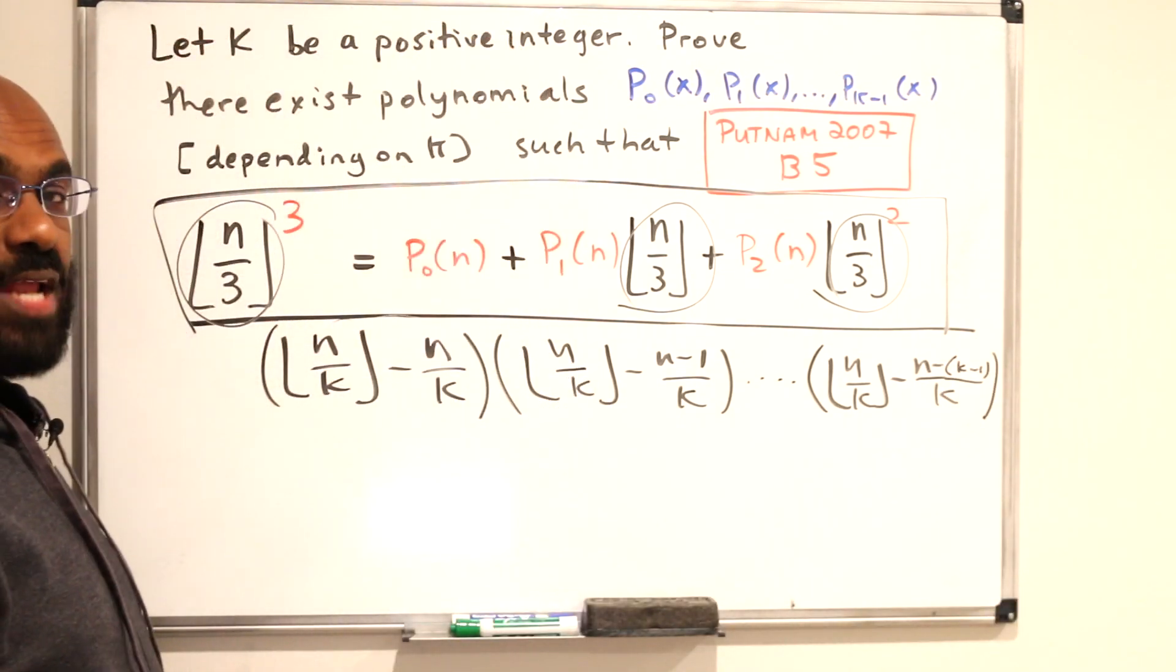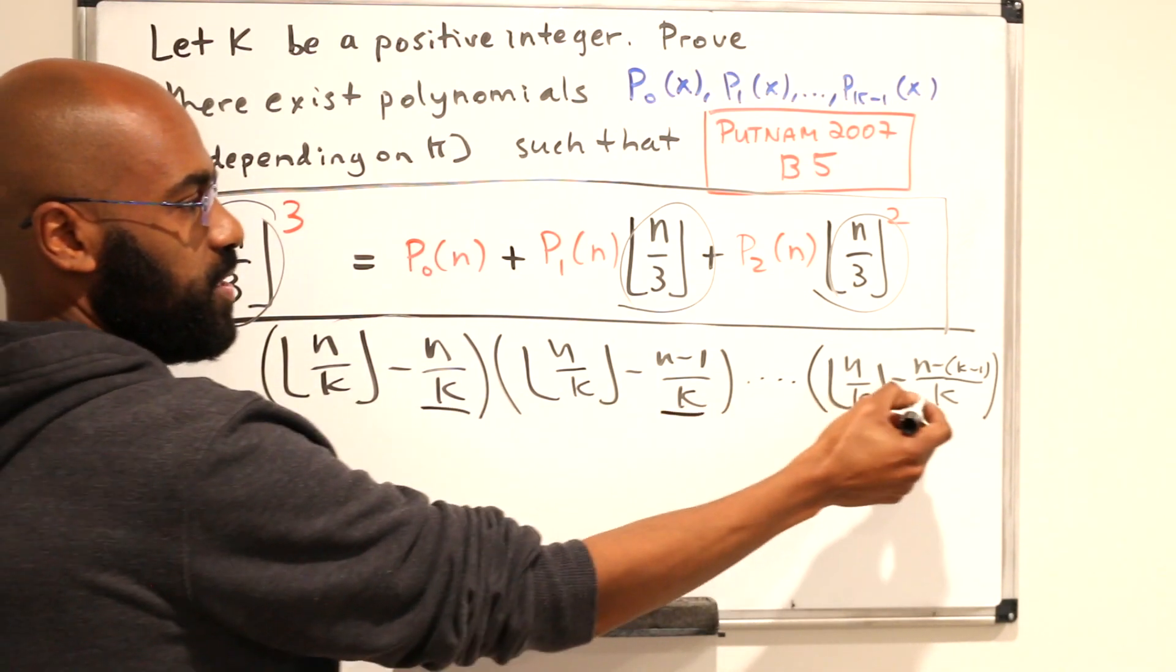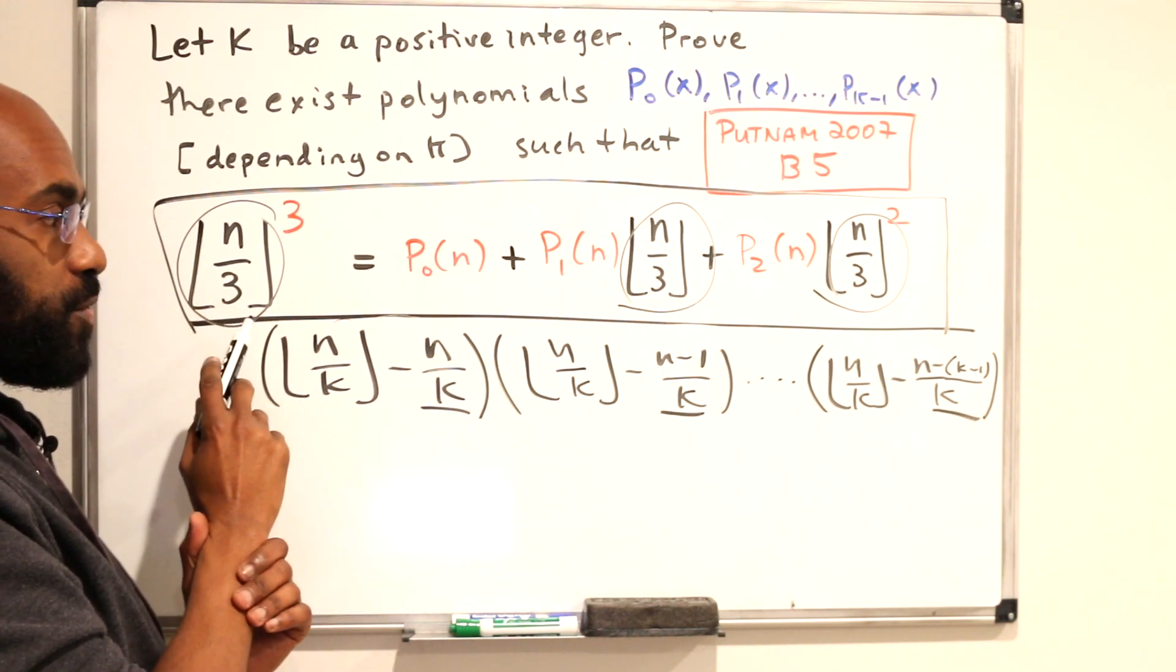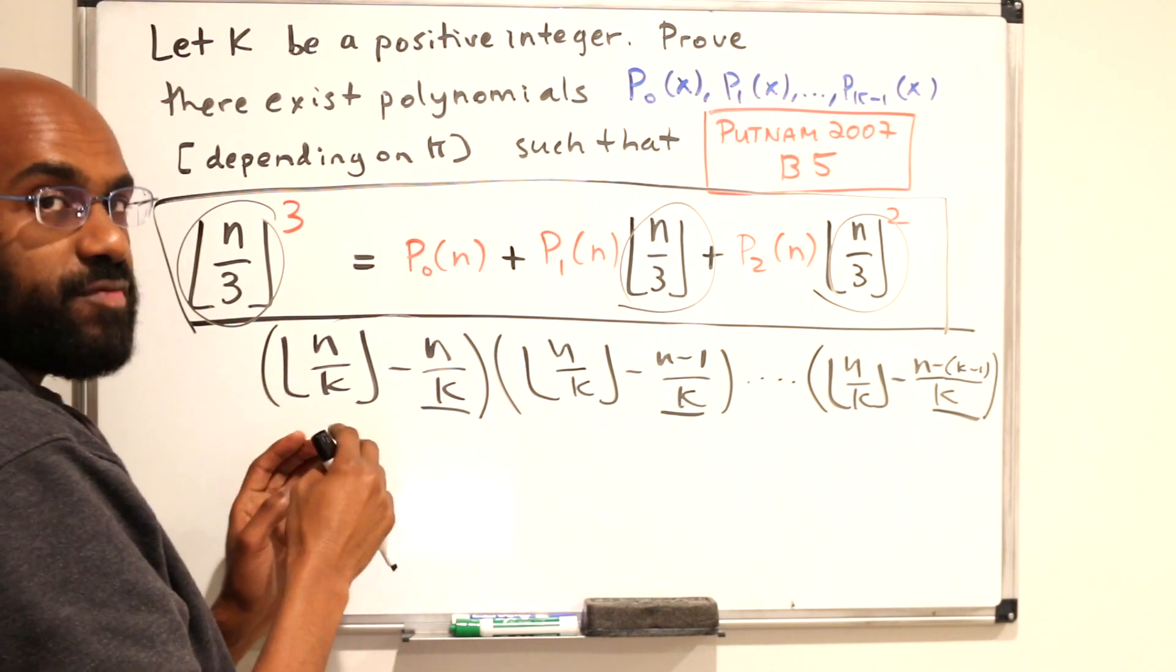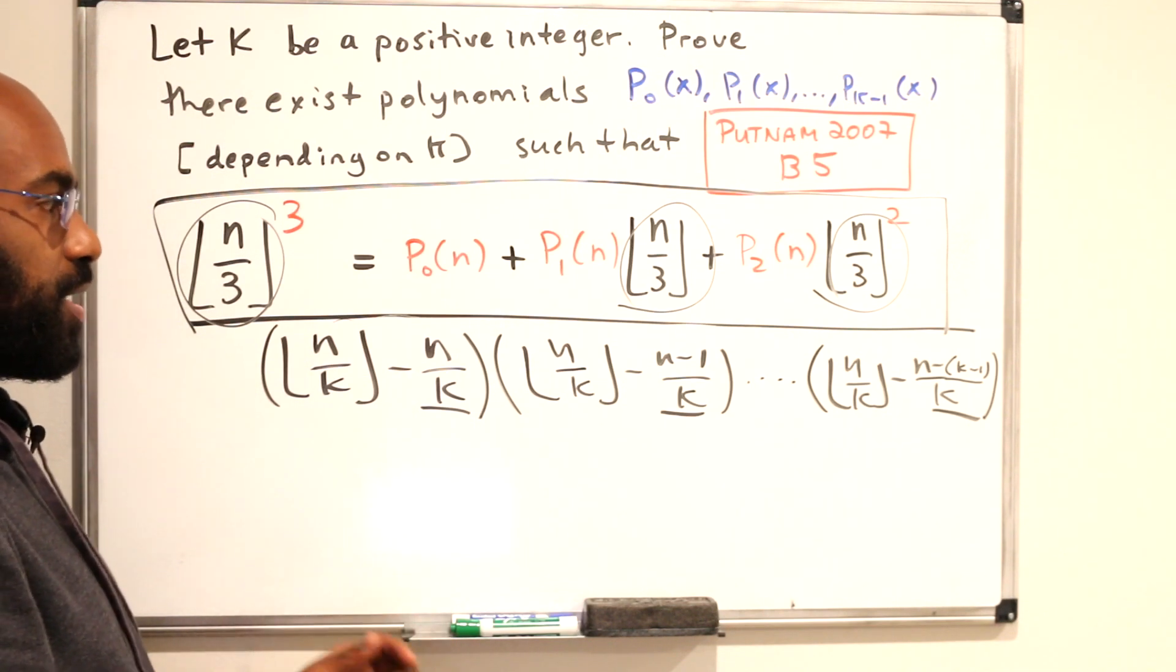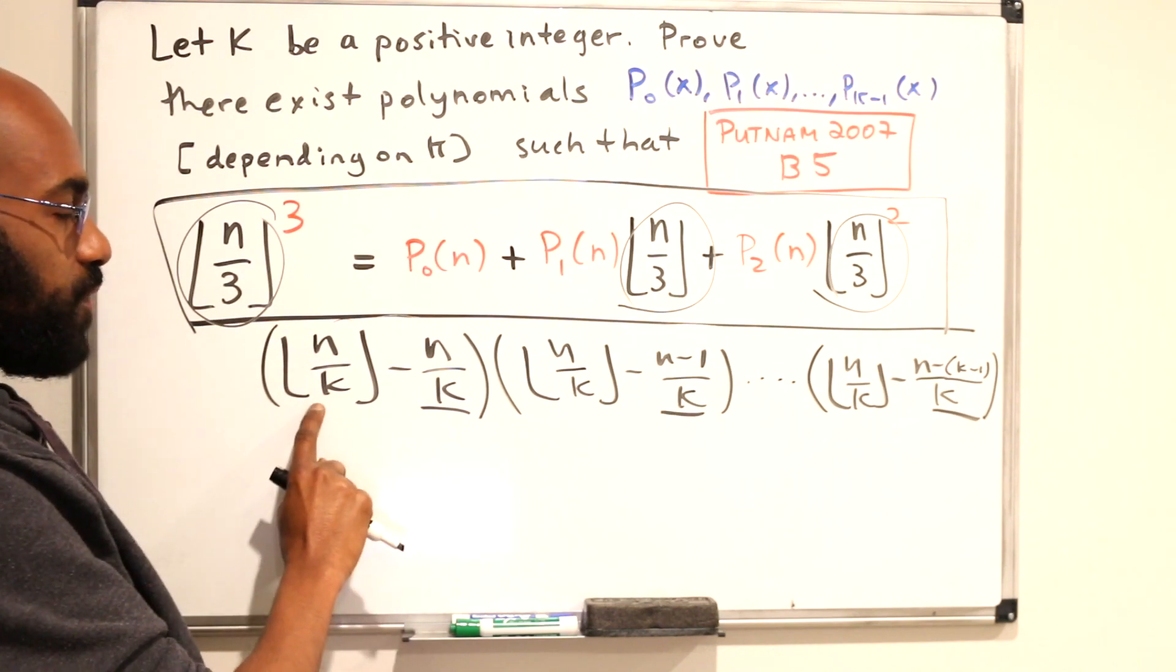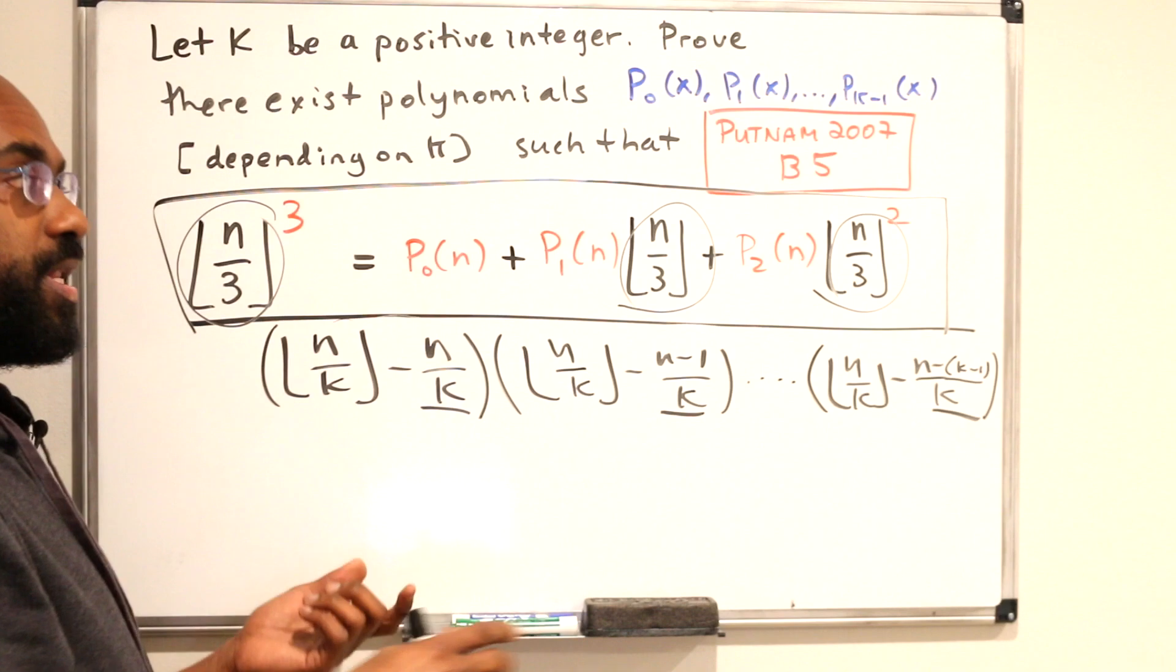Okay, so if it happens to be true that the floor of n over k always takes on one of these values right over here, then using the same principle we did with the floor of n over 3, we'll get that the floor of n over k satisfies the expression that we wanted originally in the problem. So the thing that's left for us to consider is why, for any fixed k, the floor of n over k must take on one of these values over here. So let's state that as a lemma and try to prove it.